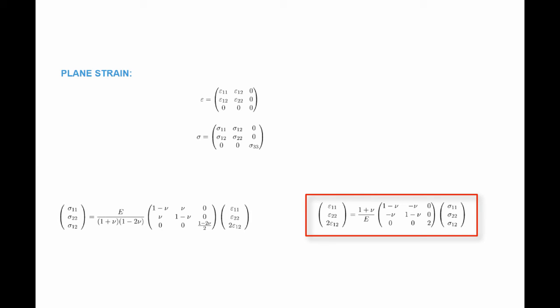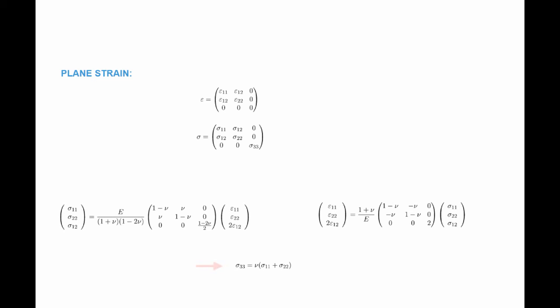This is the relationship between epsilon_11, epsilon_22, and 2*epsilon_12, and the three stress components sigma_11, sigma_22, and sigma_12 in the plane strain condition. And don't forget that in the plane strain condition, sigma_33 develops in the material, equal to Poisson's ratio times (sigma_11 + sigma_22).